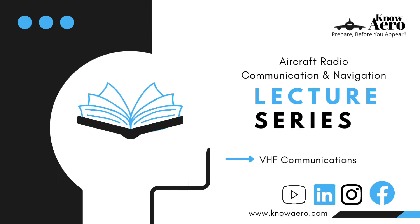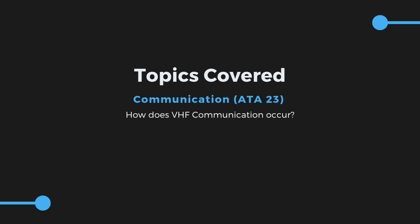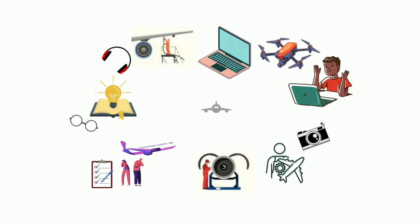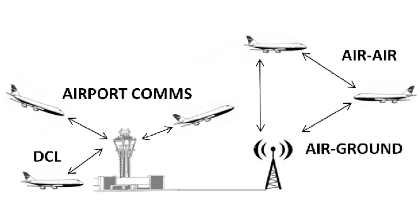Hello everyone, we are back with our next lecture on our lecture series of aircraft communication and navigation. Today we will learn how VHF communication occurs, what are the components used, and the type of antenna used for transmission and receiving. VHF communication systems are widely used for maintaining contact between the ground and the aircraft, employing line-of-sight transmission, which translates to a range of about 30 miles for an aircraft operating at 1,000 feet above the ground.